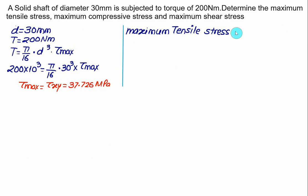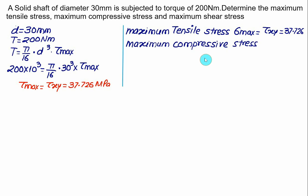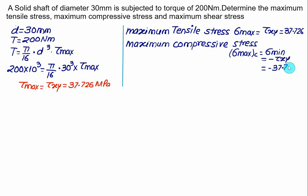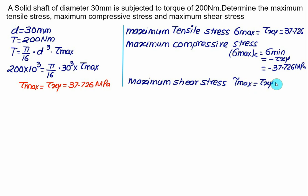So σ_max, σ_min, and τ_max all have the same magnitude of 37.726 MPa for this pure torsion case.